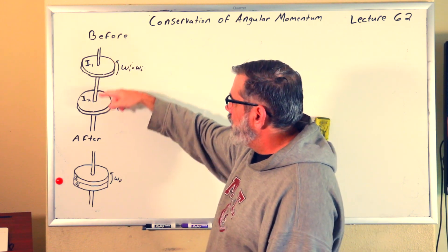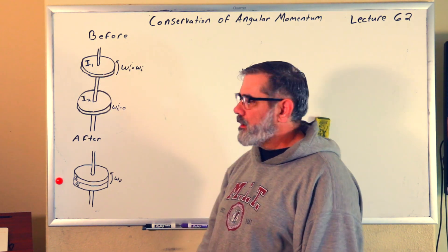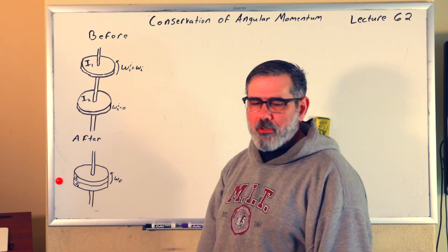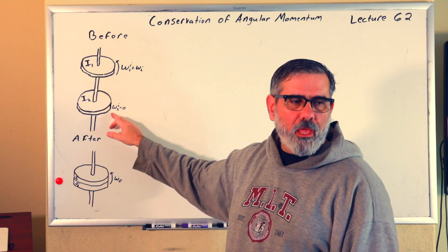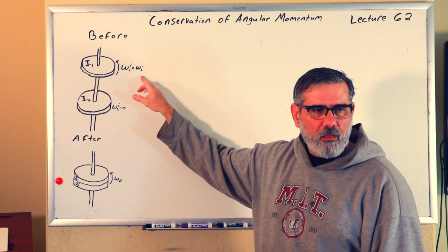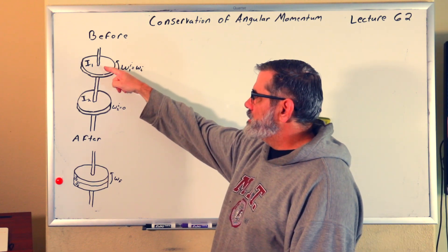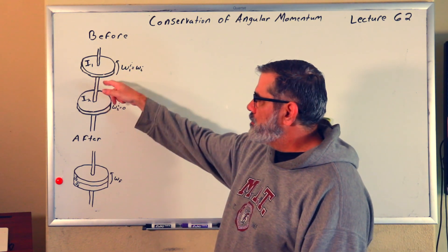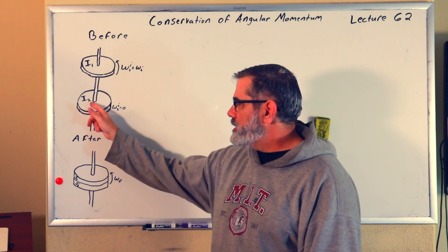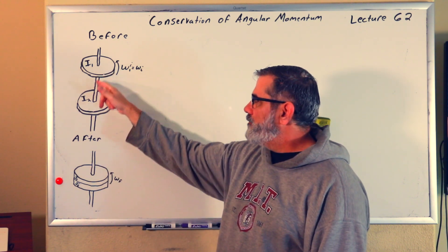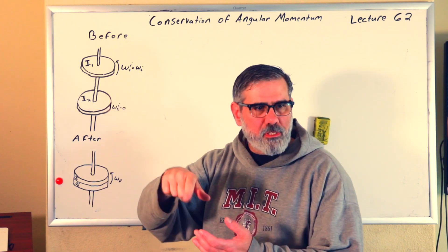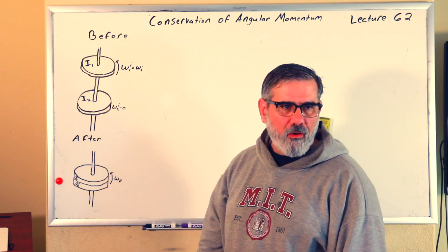We have a rotational axis with a couple of disks on it. The first disk has moment of inertia I1; the second disk has moment of inertia I2. The second disk is stationary — not rotating — whereas the first disk is rotating with some initial angular velocity. What's going to happen is this disk slides down on a frictionless bar and impacts the second disk. We assume there's friction between the two disks so that ultimately they end up spinning at the same velocity.